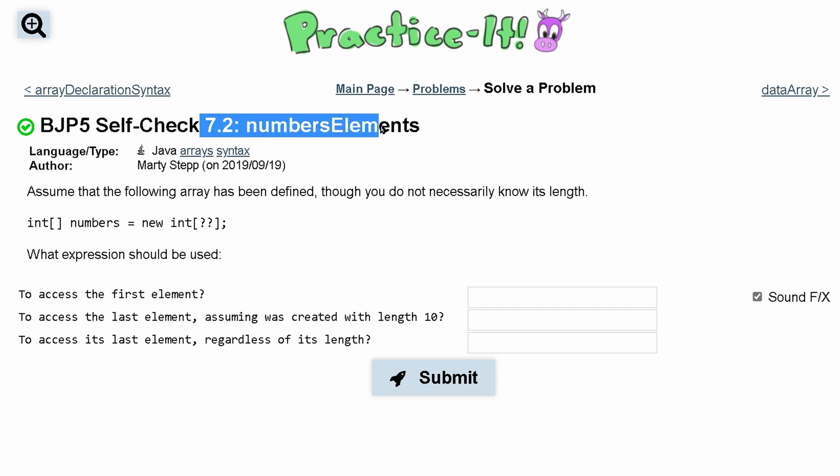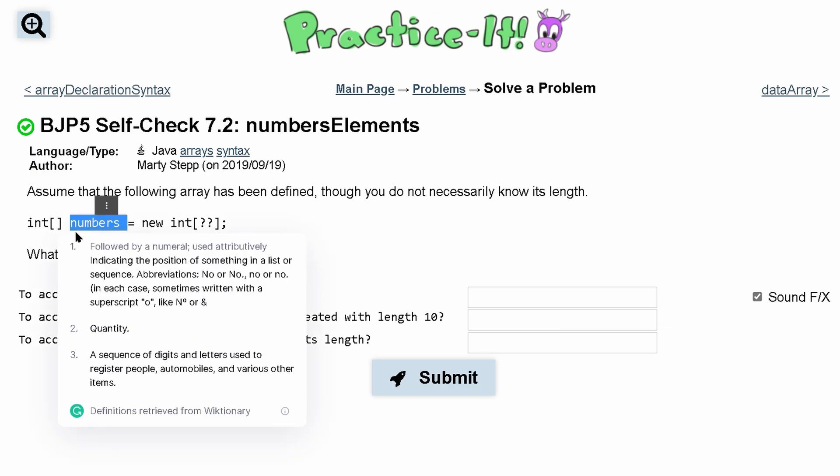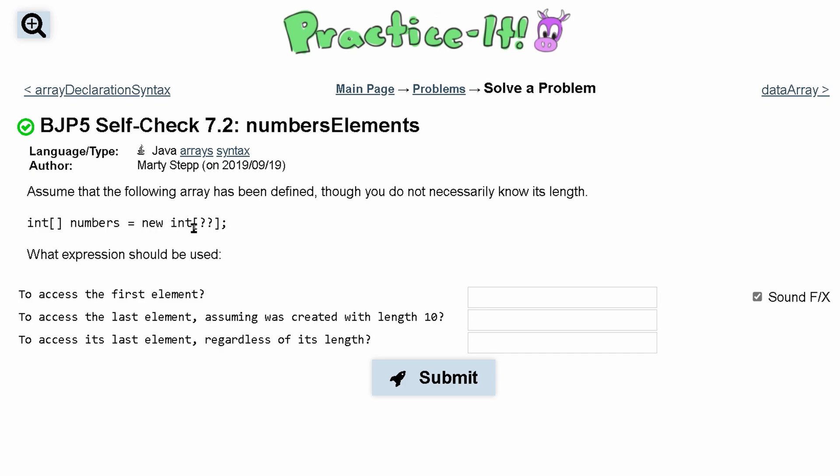Check exercise 7.2 numbers elements. We can assume that the following array has been defined though we don't necessarily know its length. So ints, we have our brackets here, it's a one-dimensional array. We have the name of it which is numbers and it's equal to a new int where we don't know the size, it's not specified or given to us here.